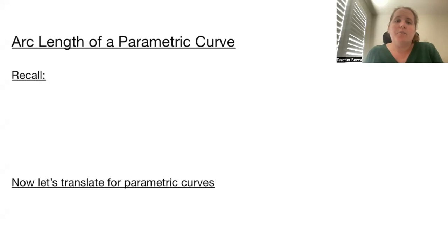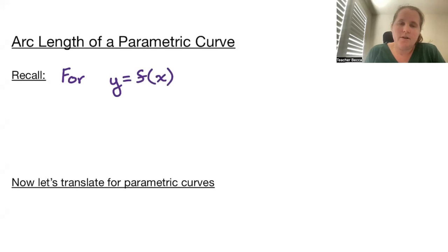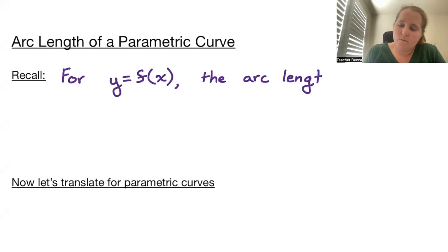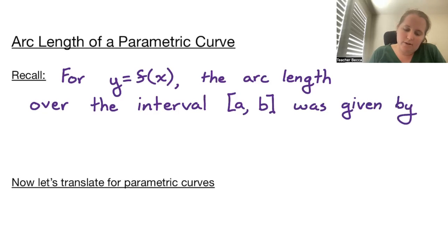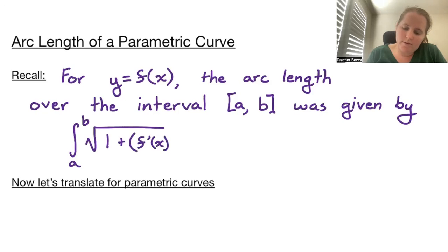Welcome to arc length of a parametric curve. Recall that for y equals f of x, the arc length over the interval a to b is given by the definite integral from a to b of the square root of 1 plus f prime of x squared, dx.